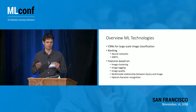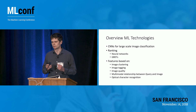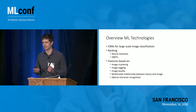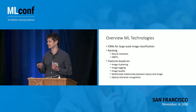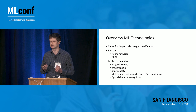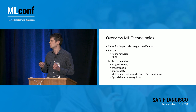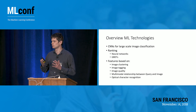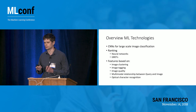The technologies we use include convolutional neural networks for large-scale image classification. For ranking, we use a combination of neural networks and GBDTs. We also use features that power those neural networks or GBDTs — for example, from image clustering, image tagging, image quality, relationship modeling between query and image, or optical character recognition.